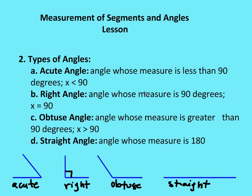An acute angle is an angle whose measure is less than 90 degrees — between 0 and 90, but not equal to 0 or 90. A right angle is an angle whose measure is exactly 90 degrees. An obtuse angle is an angle whose measure is greater than 90 degrees, between 90 and 180. And a straight angle is an angle whose measure is equal to 180 degrees.